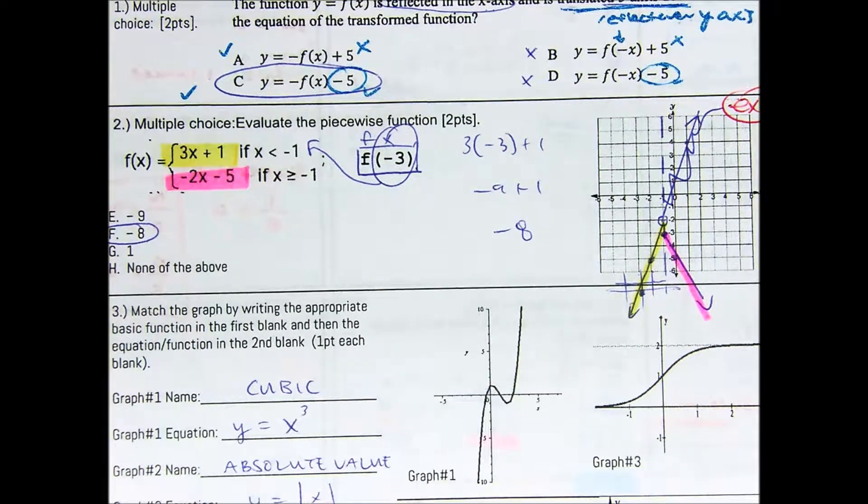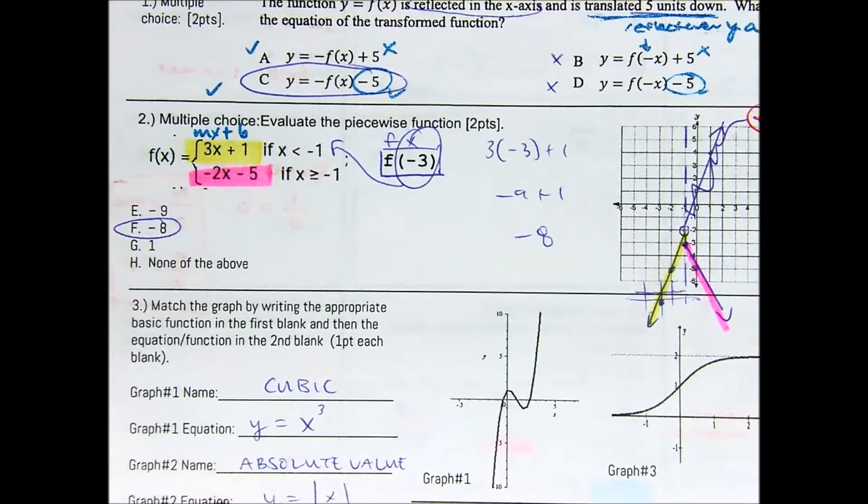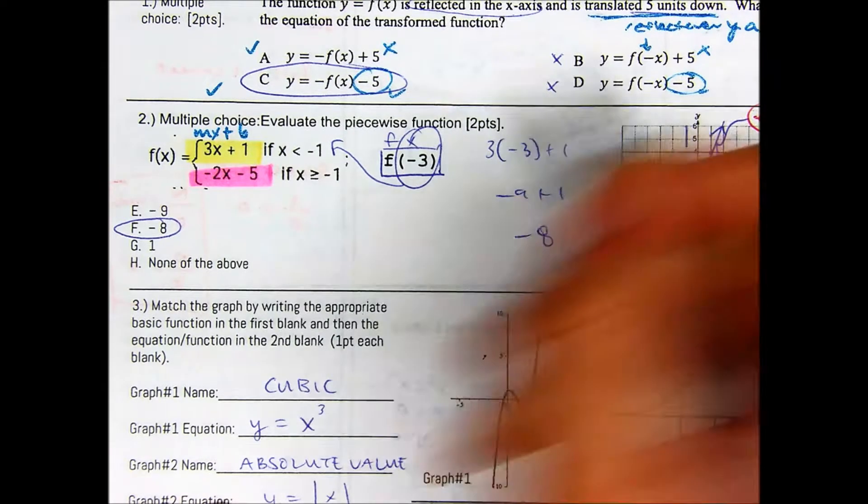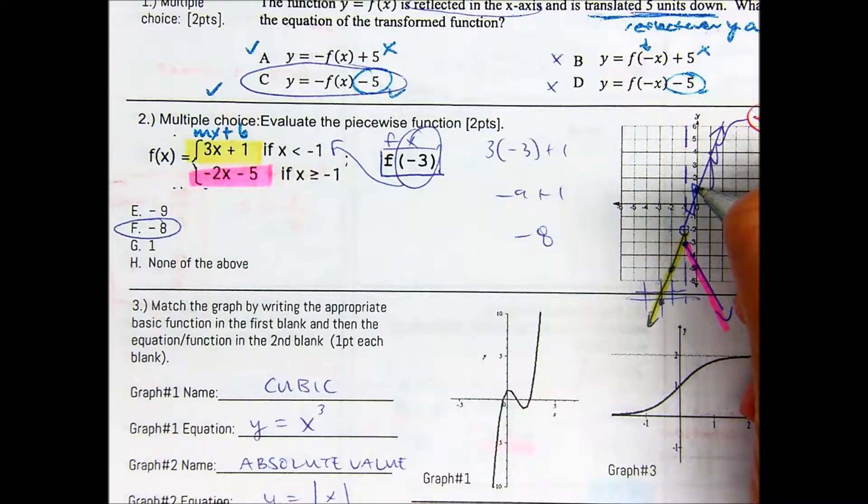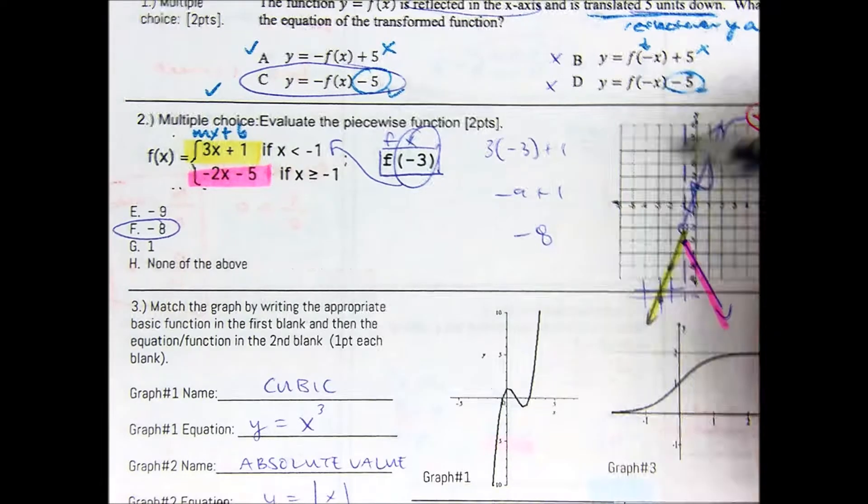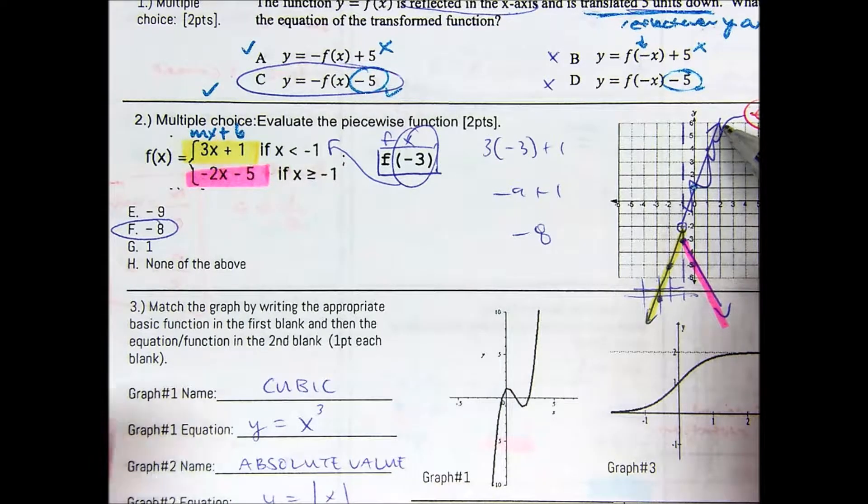Also, if you graphed this, 3x plus one - this is in slope intercept form, mx plus b. And b is your y-intercept at positive one, but has a slope of three. So from here, you would go left one, down three. And the reason why you do that is because it's the same thing as going a rise of positive three and then a run of positive one. So that would be a slope of three.